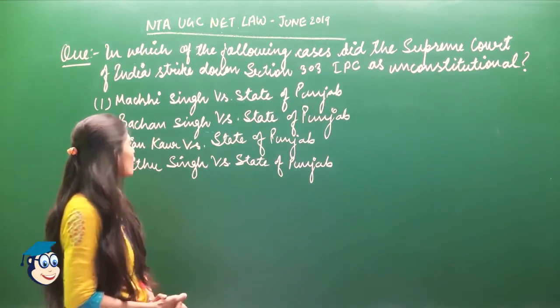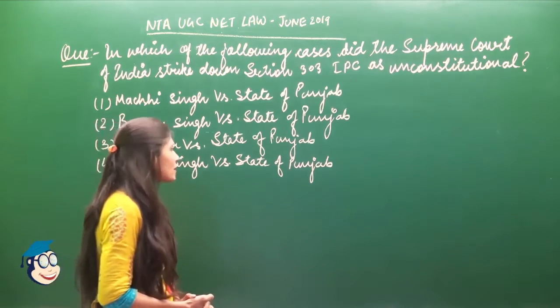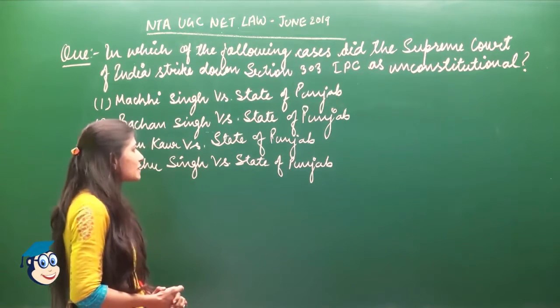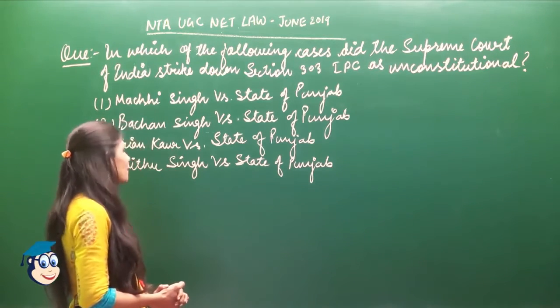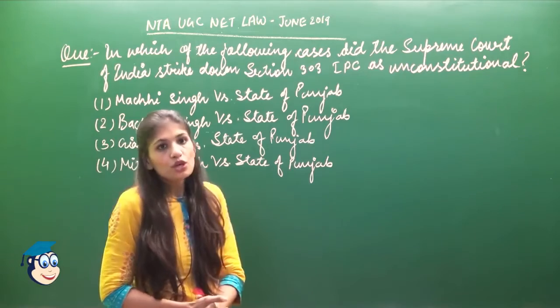The options given are: (A) Machi Singh versus State of Punjab, (B) Bachan Singh versus State of Punjab, (C) Gyan Kaur versus State of Punjab, and (D) Mithu Singh versus State of Punjab.